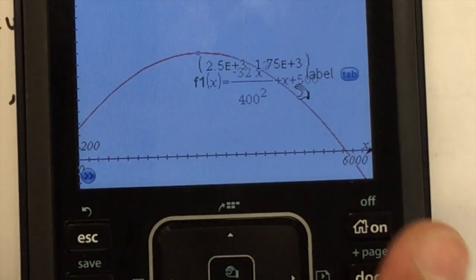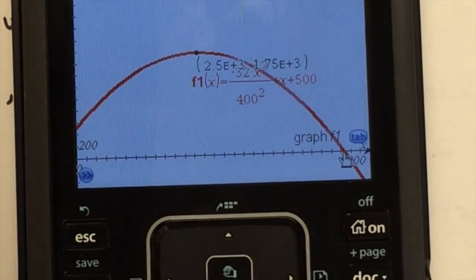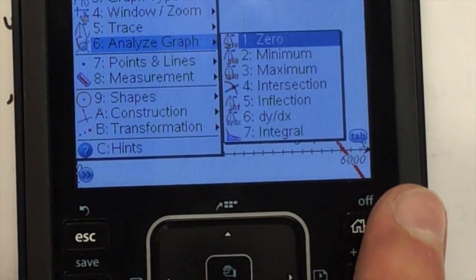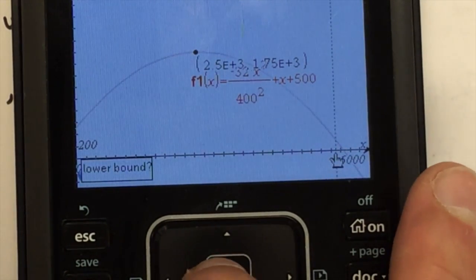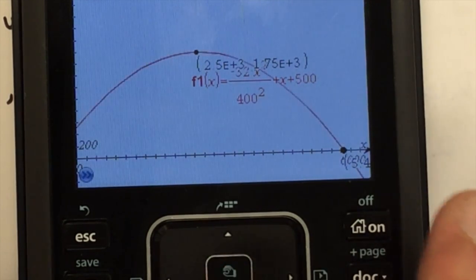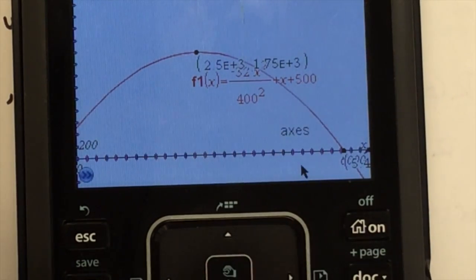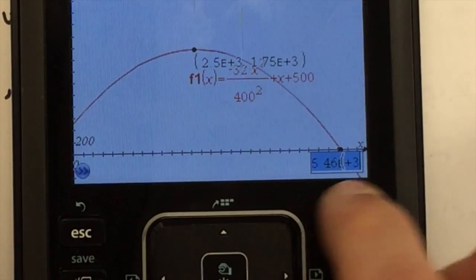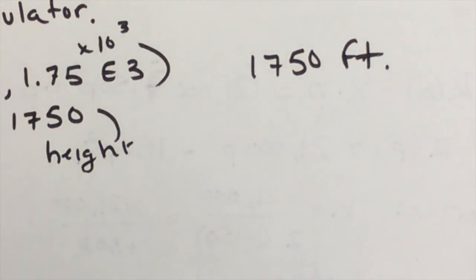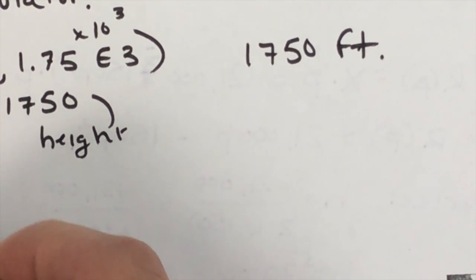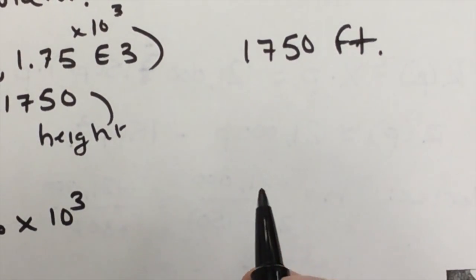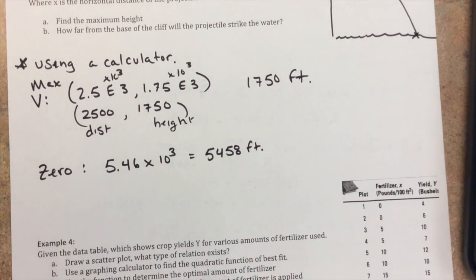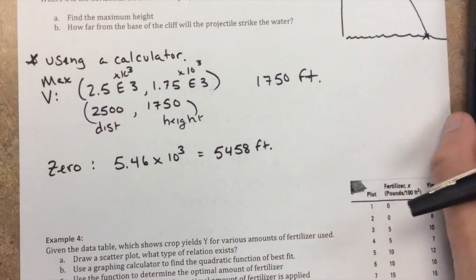Likewise, if I bring this calculator back, I can find out where it hits here. How? Again, if I hit Menu, and I go to Analyze Graph, I want to find a 0. So I go to 0. And I just go to the left, highlight over, over to the right, and there is my 0 right there, at 5.4, if we can see that, 5.46e3. So my 0 is 5.46 times 10 to the third, which I think, if you find it even more exact, is 5,458 feet, is where the splashdown is. So that's another way we can use our calculator, instead of doing all the algebra that we could for each one of those problems previously.